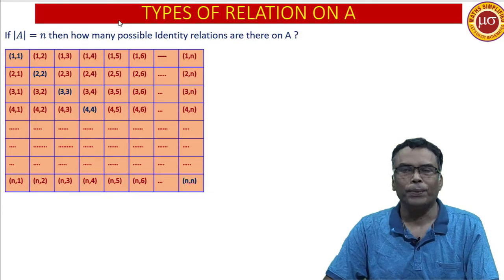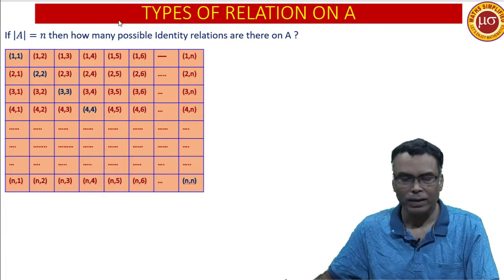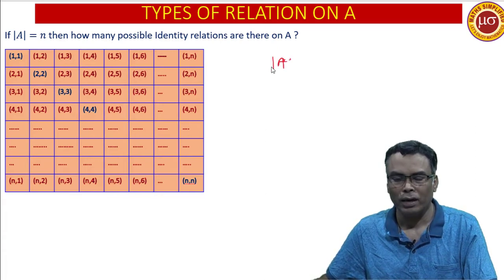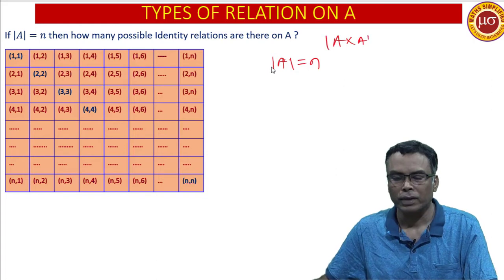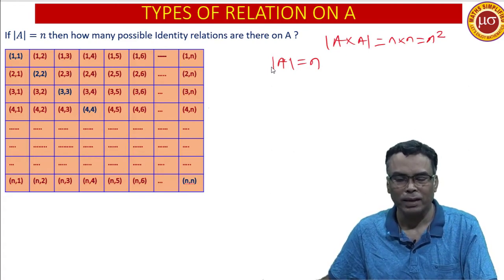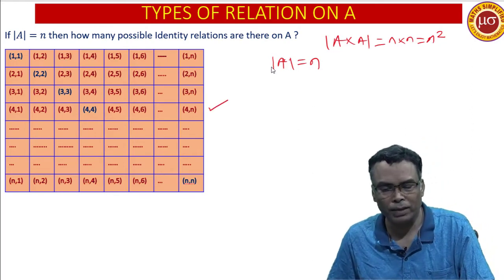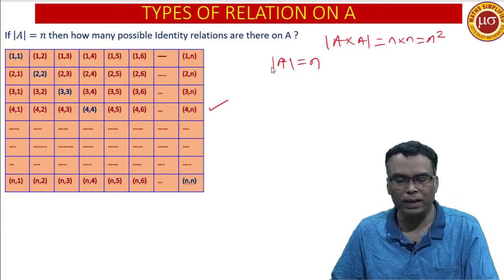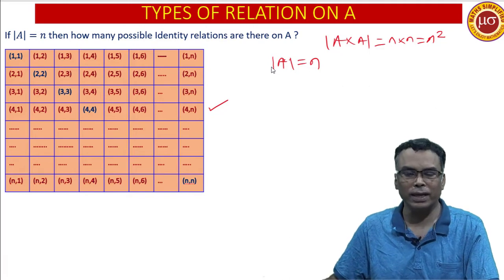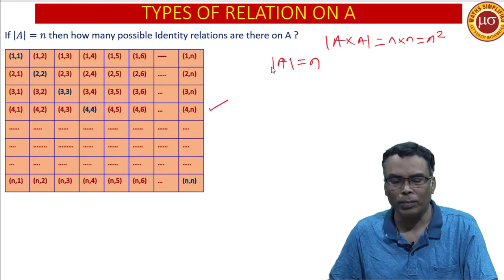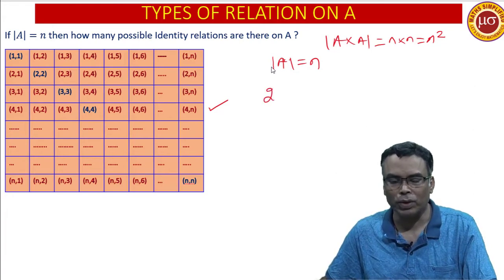First of all, if there are N elements in a set — mod A, or number of elements in A, mod A is N — then how many elements are there in A cross A? There are N into N, that is N square elements. Let us arrange these N square elements in an N cross N grid.